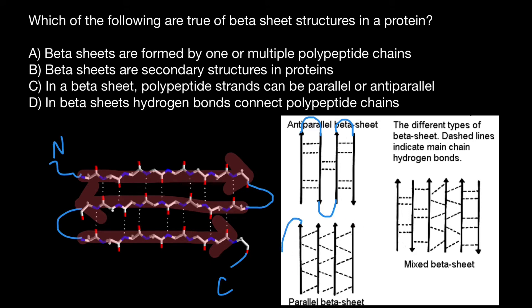So the first one would be like this. The second one would be like this. And the third one would be like this. As you see, loops in parallel beta sheet would be much bigger than loops in anti-parallel beta sheet.